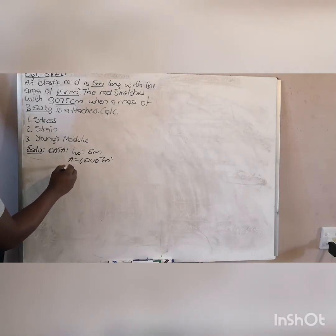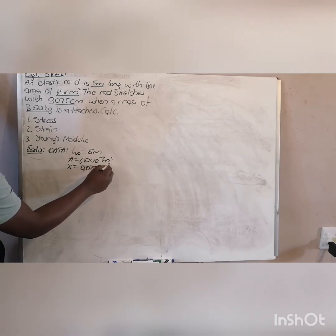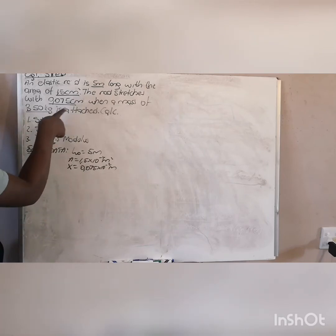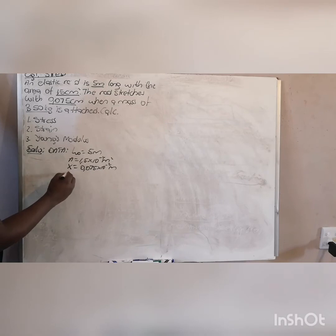And then your change in length is 0.075 times 10 exponent negative 2 meters. Your mass is 350 kg. They give you a mass, so you have these four values which they give you.